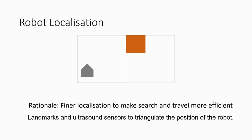Finally, we discuss robot localisation. Currently, the server only tells us which of the 9 grids the robot is in. Such crude positioning limits the efficiency of search and pathfinding. For example, knowing which grid the robot is in and which grid the deposit zone is in only tells us the general direction to head towards. After reaching the target grid, the robot may still have to search for the deposit zone. However, if we know which part of the grid the robot and deposit zone are in, we can form a more direct and shorter path. Furthermore, knowing the precise position of the robot tells us which part of the target grid has been searched, allowing us to prioritise unsearched parts that have a higher probability of containing objects, making the search more efficient.